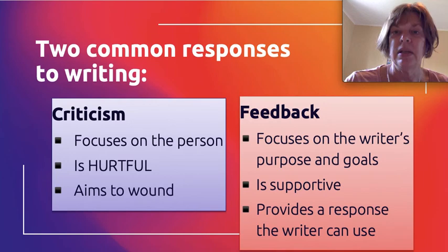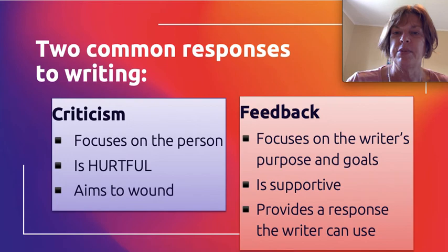But if you're looking at the writer's intentions and you're saying, 'OK, you intended to try this experimental way — it works up to this point, but after this point it doesn't work at all,' the writer can then do something with that. Providing a response that the writer can use should be your guiding light when you're giving peer feedback. Can the writer use this?